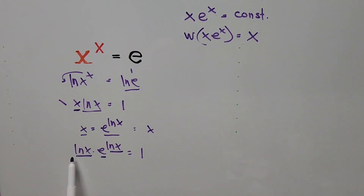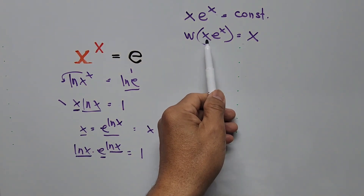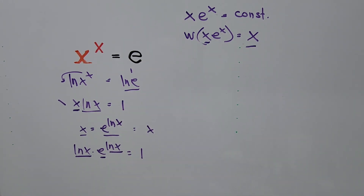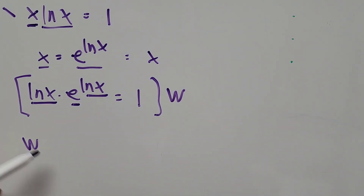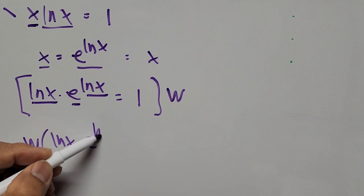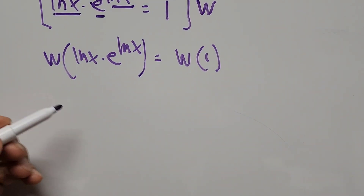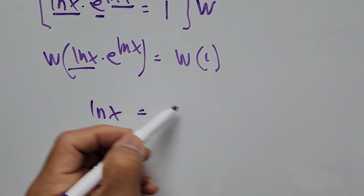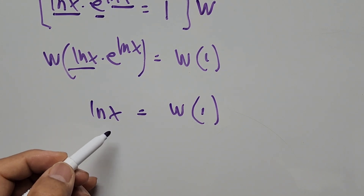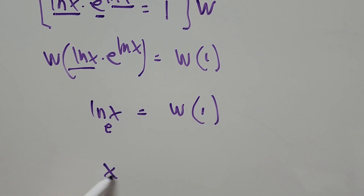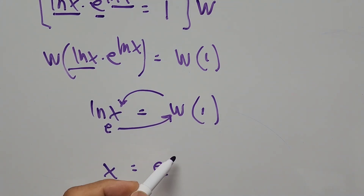We can now apply the Lambert W function. Applying W to both sides: W of ln of x times e to the power of ln of x equals W of 1. This gives us ln of x equals W of 1. Transforming into exponential form by the definition of logarithm — since ln is logarithm of base e — we get x equals e to the power of W of 1.